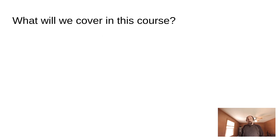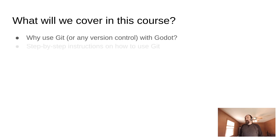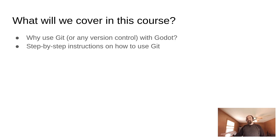So what will we be covering in this course? We'll be covering a ton of stuff, starting from absolute beginner stuff — like why use Git or any version control system with Godot, which is what we're going to be talking about today. Then we're going to move to step-by-step instructions on how to use Git, that's in the next episode. So if you want to skip some of this high-level stuff and just get right down to actually using Git, you can skip to the next episode.